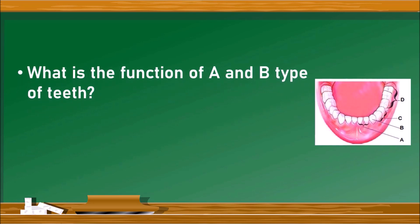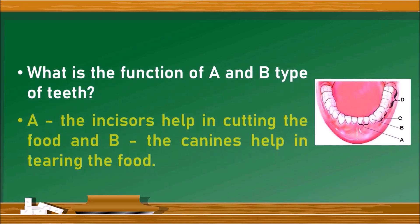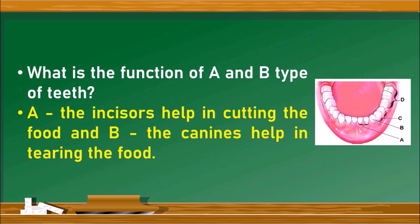What is the function of A and B type of teeth? Here A represents the incisors. Incisors help in cutting the food, whereas B represents canines. They help in tearing the food.